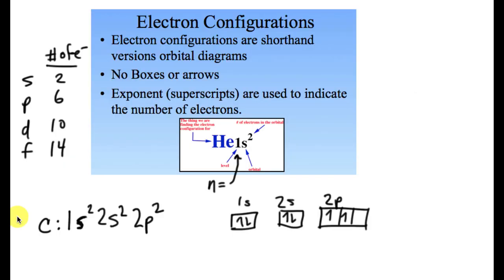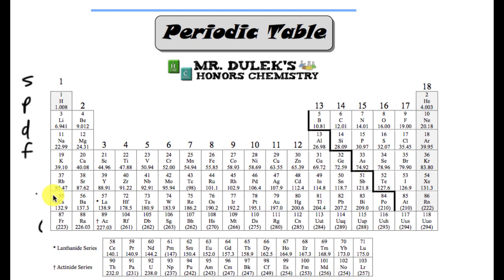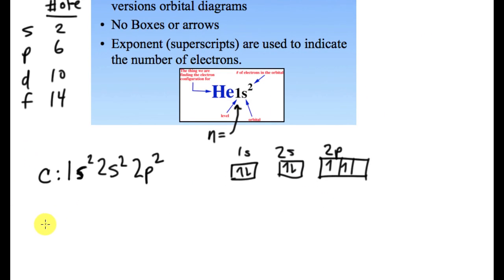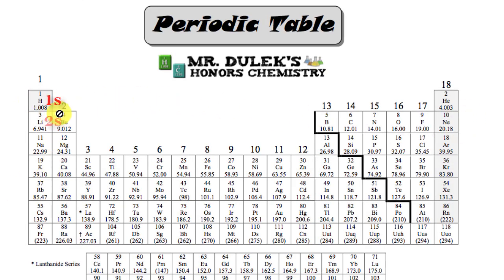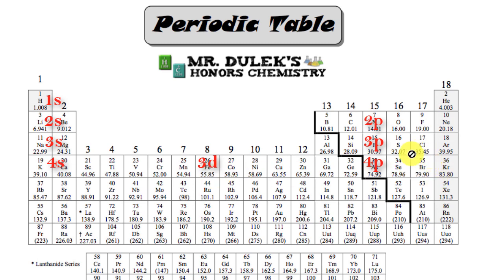Let's draw another electron configuration — something a little longer. Let's do bromine, which has 35 electrons. I'm going to go: 1s², 2s², 2p⁶ — filling that up — and I'm going through the periodic table. So: 1s², 2s², 2p⁶, 3s², 3p⁶, 4s², 3d¹⁰, and then back to 4p. I'm going to end up on 4p.